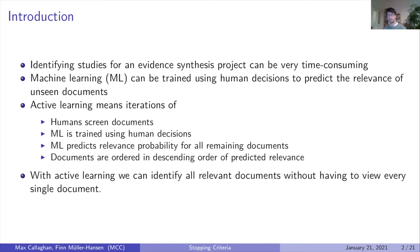Machine learning can help using active learning pipelines, which means we have iterations of human screening documents followed by training a machine learning algorithm using those human decisions. The algorithm then predicts relevance probability for all remaining documents, which are ordered in descending order of predicted relevance.